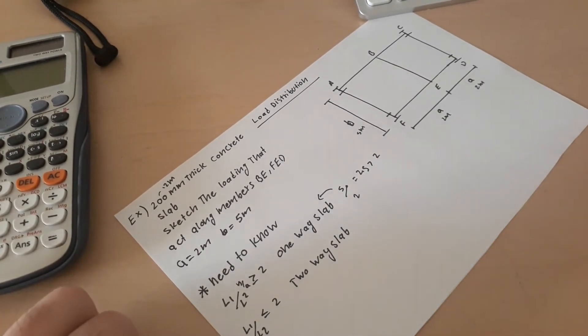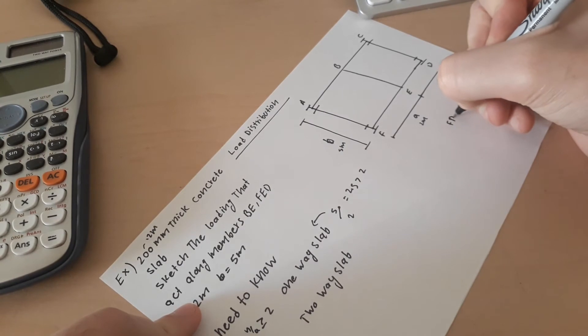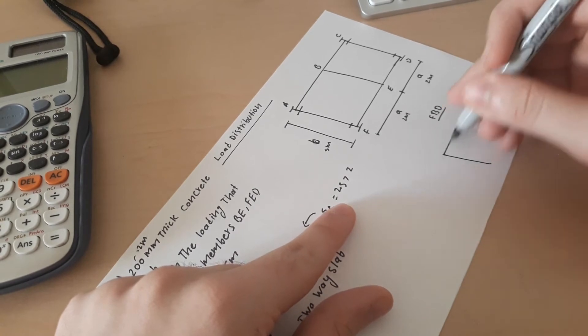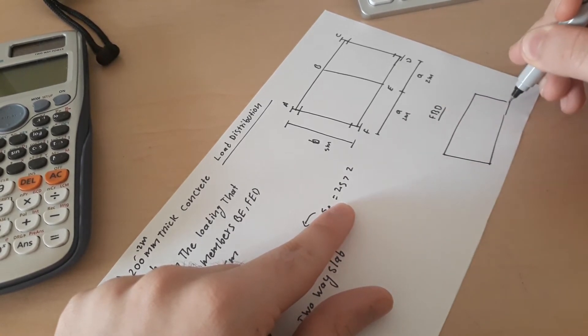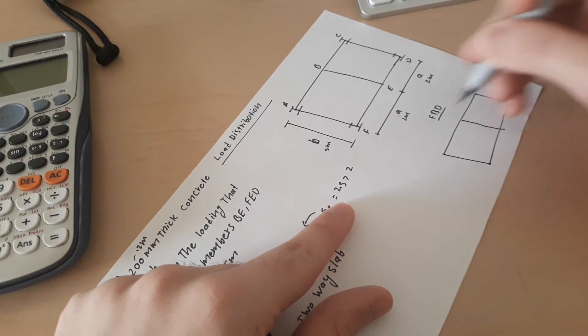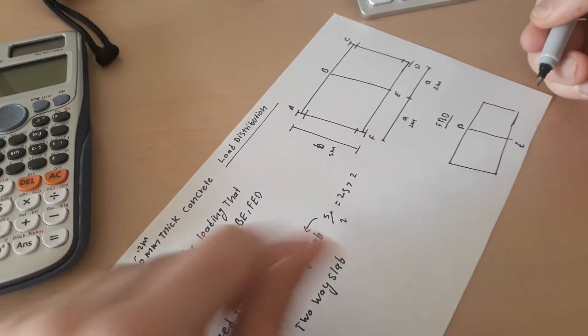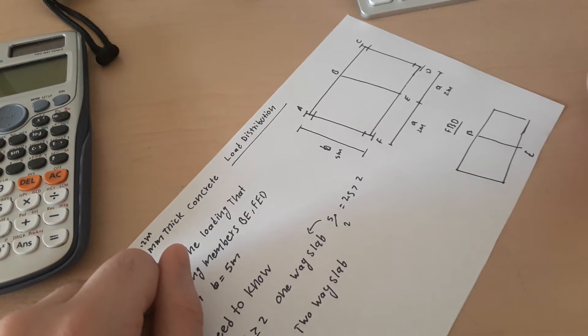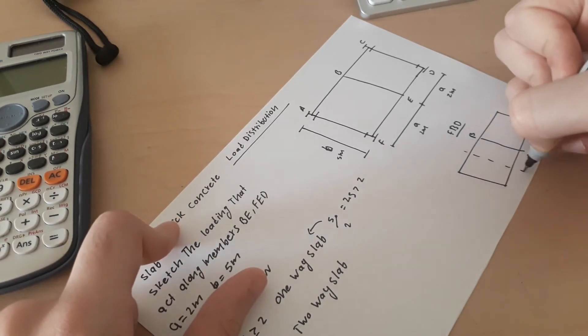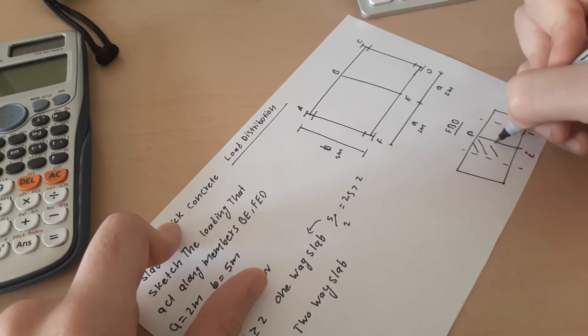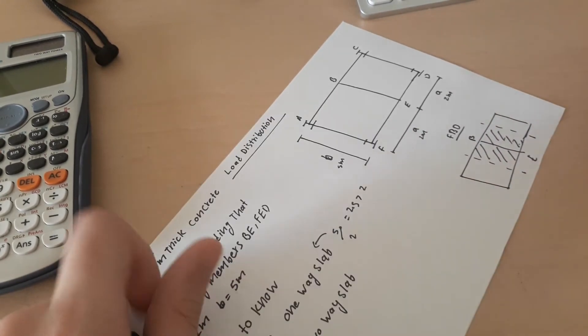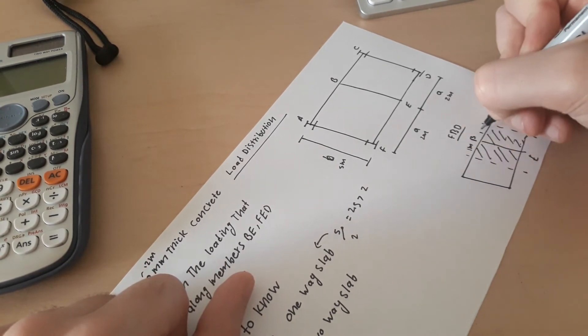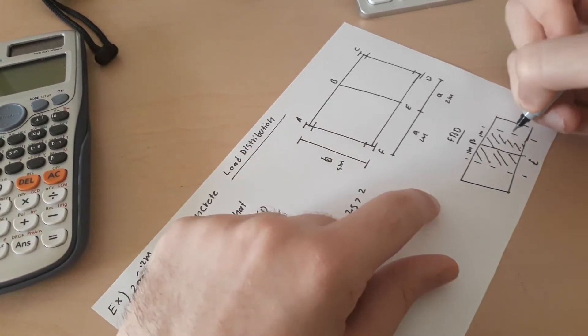Now we know it's one-way slab, we have to draw the free body to find the tributary length. So I'm going to draw a small free body right here. So we know that this is BE. Since BE is in the middle, the weight is distributed half on each side. So half of this one and half of this one.